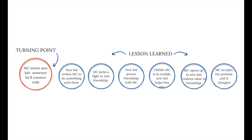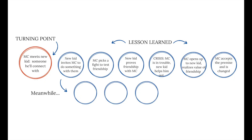From there our main character can accept the premise and is changed. Now we also know that as this friendship is developing, our main character is still involved in that shady hobby and it's getting him into more and more trouble, so we need to include that in our outline as well. As the friendship develops, these subplots happen beneath: the main character makes a choice about their shady hobby, that choice leads to another choice, and that choice eventually leads them to the trouble that they're going to need rescuing from.